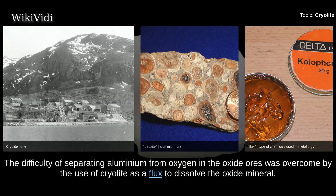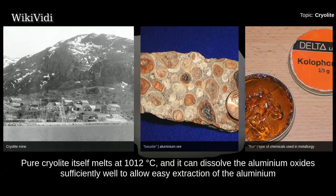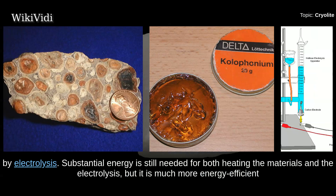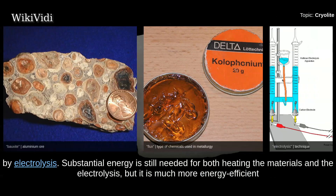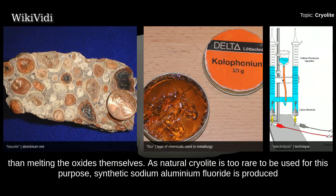Cryolite acts as a flux to dissolve the oxide mineral. Pure cryolite itself melts at 1012 degrees Celsius and can dissolve aluminium oxide sufficiently well to allow easy extraction of aluminium by electrolysis. Substantial energy is still needed for both heating the materials and the electrolysis, but it is much more energy efficient than melting the oxides themselves.